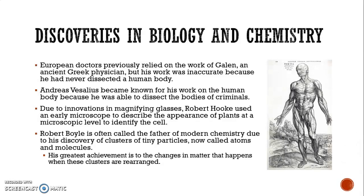European doctors previously had relied on the work of Galen, an ancient Greek physician, but his work was inaccurate because he had never dissected a human body — rather it was dependent upon animals. Andreas Vesalius became known for his work on the human body because he was given the opportunity to dissect the bodies of criminals by a monarch. Robert Hooke used an early microscope to describe the appearance of plants at a microscopic level and was the first to identify the cell. Robert Boyle is called the father of modern chemistry because he was the first to discover tiny clusters of particles we now refer to as atoms and molecules, and he studied the changes in matter when these clusters are rearranged, as well as his studies on gases.